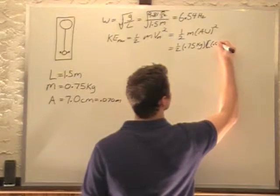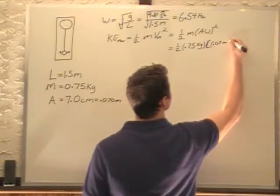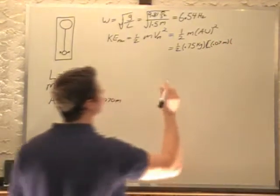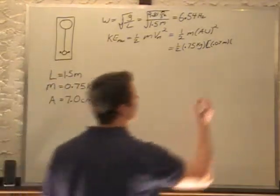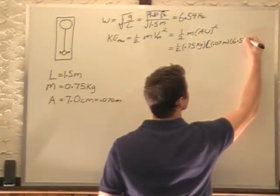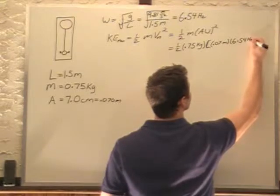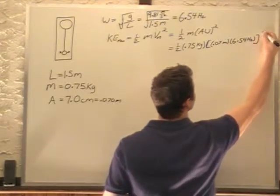So 0.07 meters times omega that we figured out was 6.54 hertz, squared.